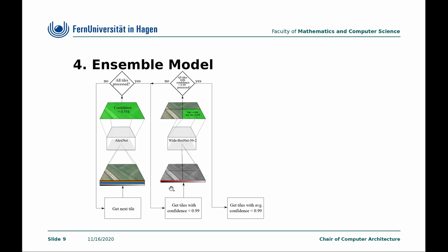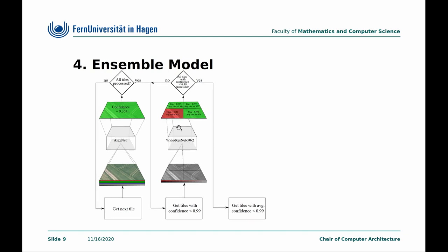We grab the necessary data layers — in this case NDVI and slope — and feed them into Wide ResNet 52 to perform a classification. We get a classification result (landable) and a confidence value, then calculate the error confidence from this network and AlexNet. We repeat this analysis for each tile with confidence less than 99% until all tiles are processed, giving us a patch-segmented map.